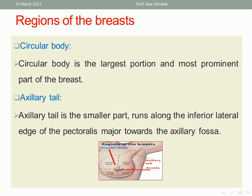Surrounding the nipple is the areola — slightly pigmented skin around the nipple. Areola in Latin or Greek means 'the small area.' It becomes deeply pigmented and larger in size during pregnancy, forming primary areola, secondary areola and so on. So the regions are: circular body, axillary tail or tail of Spence, nipple, and areola.